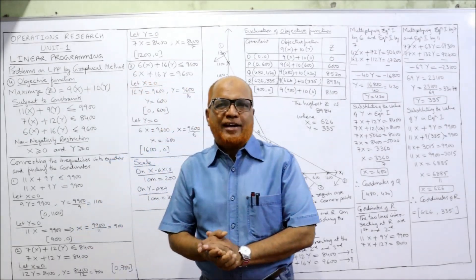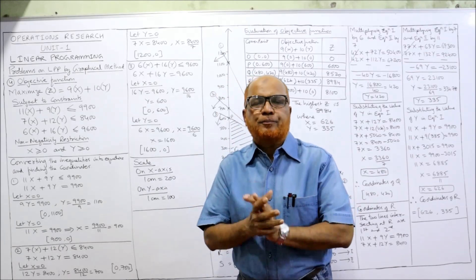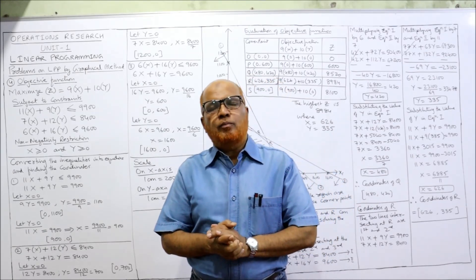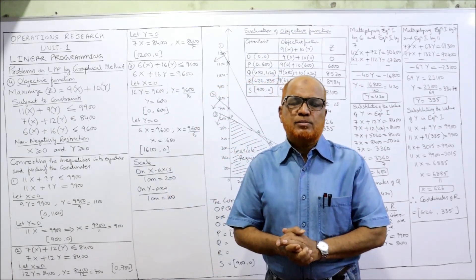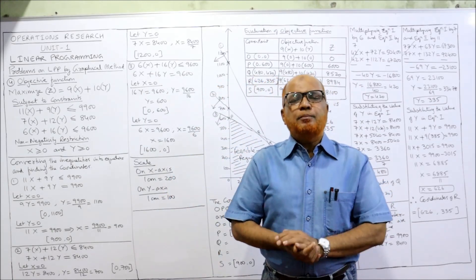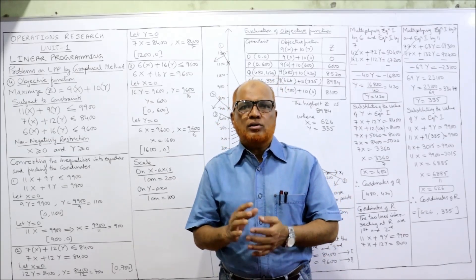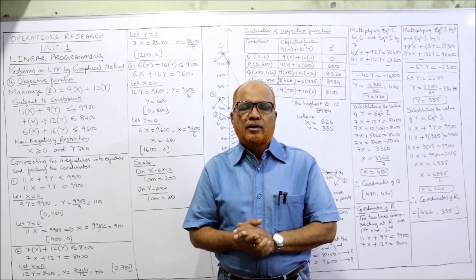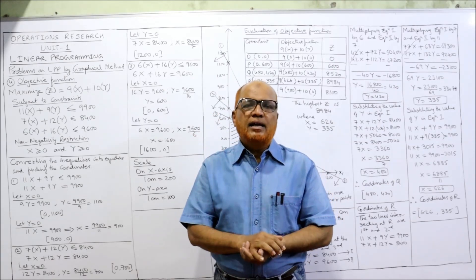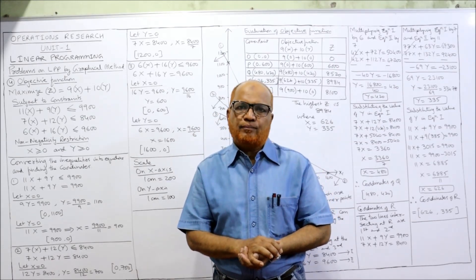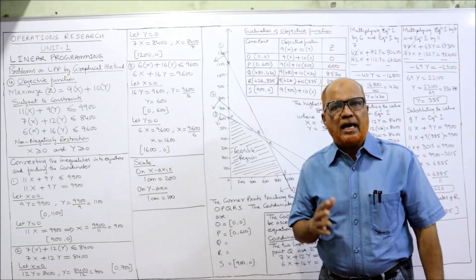Hello viewers, welcome to my channel. I'm Hashem Ali Khan. So far, three problems on linear programming by graphical method have been completed. In this video, the fourth problem will be explained. In the previous three problems only two constraints were there, but in this problem we come across three constraints. The procedure will remain the same, but you have to identify which two lines are intersecting on the graph. Watch all the videos from beginning to end for complete knowledge.